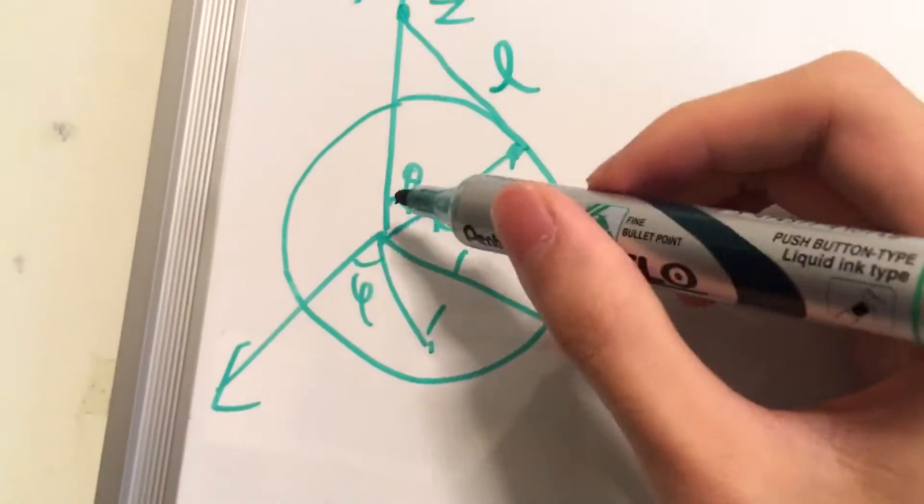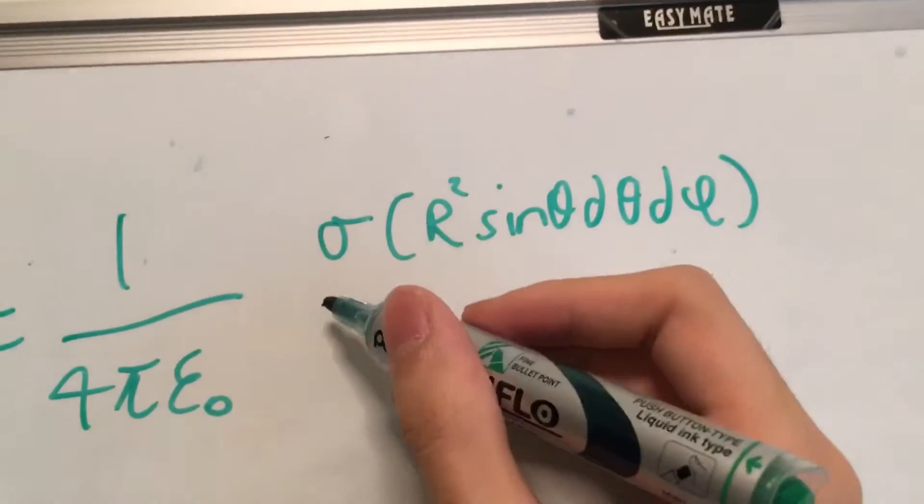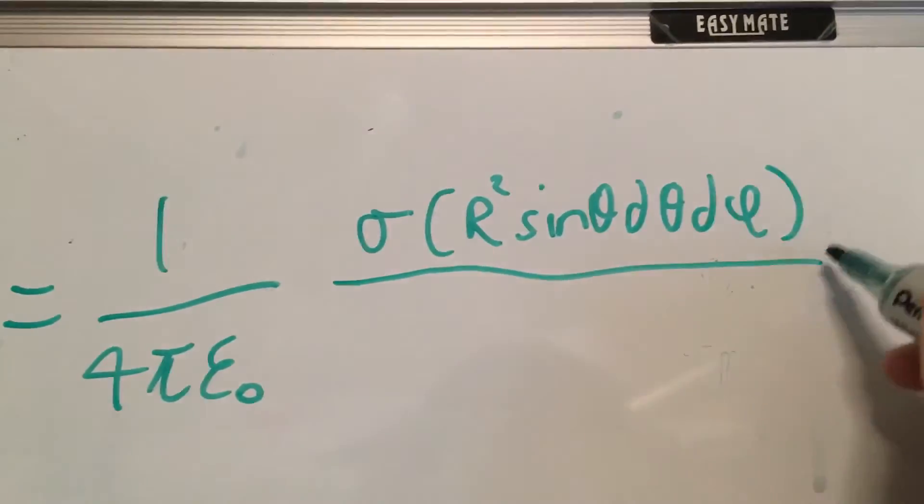Where this is theta and this is phi. And this is just simple vector calculus, so I'll assume you know where this came from.